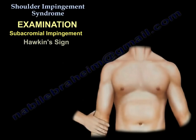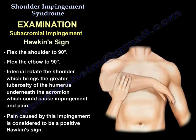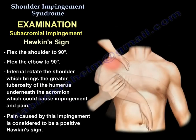The other test is called the Hawkins sign. You flex the shoulder to 90 degrees, flex the elbow to 90 degrees, and internally rotate the shoulder. That brings the greater tuberosity underneath the acromion, leading to impingement and pain — a positive Hawkins sign.